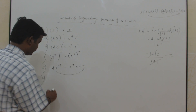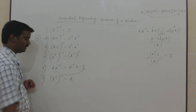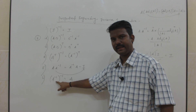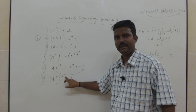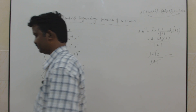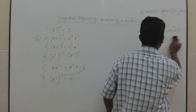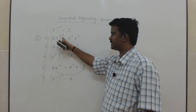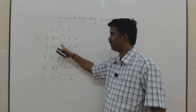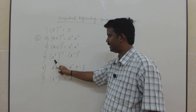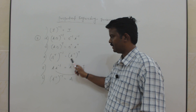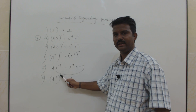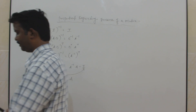The sixth property is: A inverse, the whole inverse, is A itself. In other words, the inverse of an inverse gives you back the original matrix. To summarize all properties: (1) I inverse = I; (2) (AB) inverse = B inverse × A inverse; (3) (AB) transpose = B transpose × A transpose; (4) (Aᵀ)⁻¹ = (A⁻¹)ᵀ; (5) A × A inverse = A inverse × A = I; (6) (A⁻¹)⁻¹ = A. These are the properties to remember regarding the inverse of a matrix.